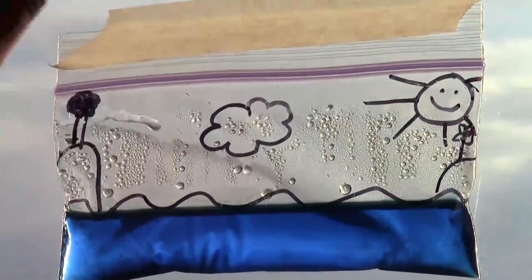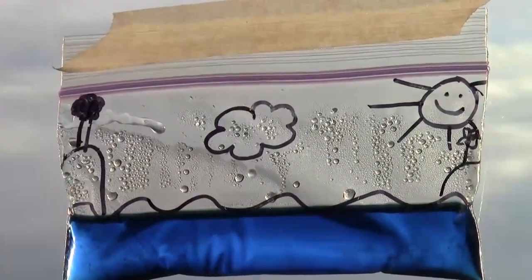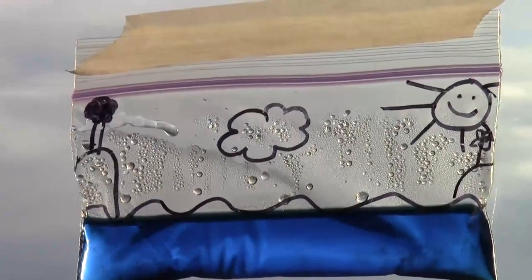Tapping there and you could see a little bit starting to rain inside the baggie. Water cycle in a bag. Thanks for watching.